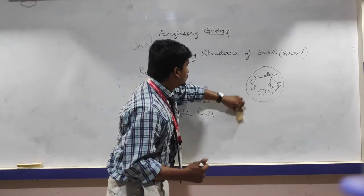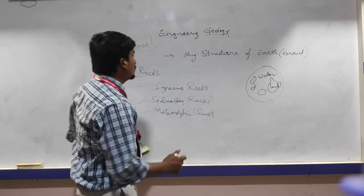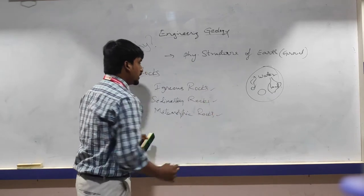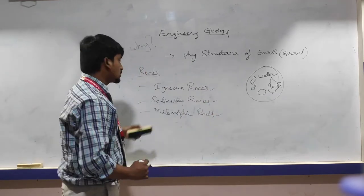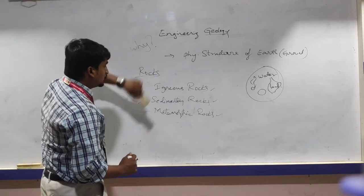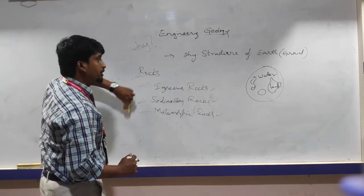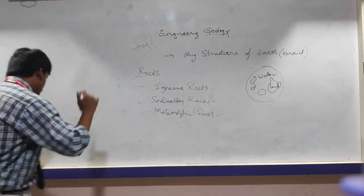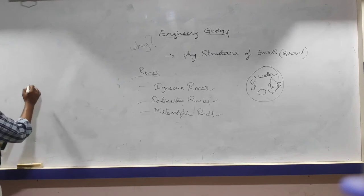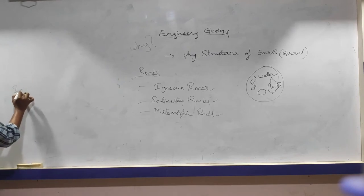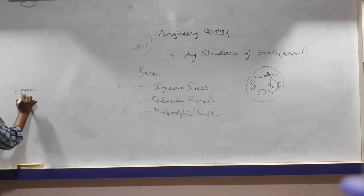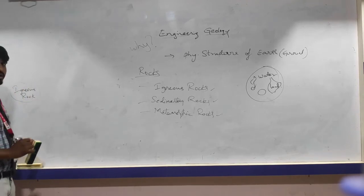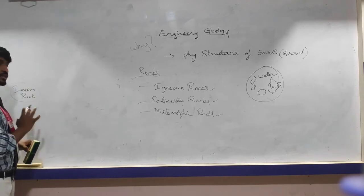These are the three major rock classifications: igneous rocks, sedimentary rocks, and metamorphic rocks. Let's start with how these rocks are formed. First, igneous rocks — how are igneous rocks formed?